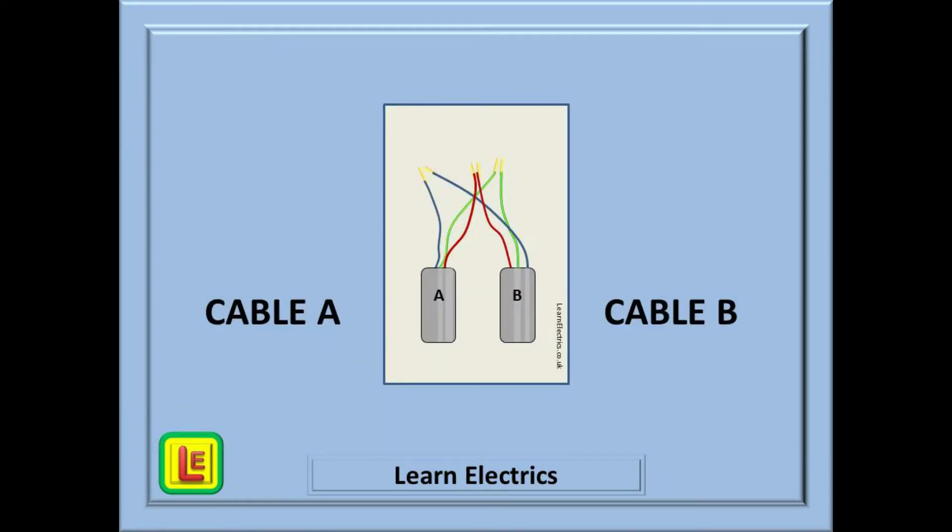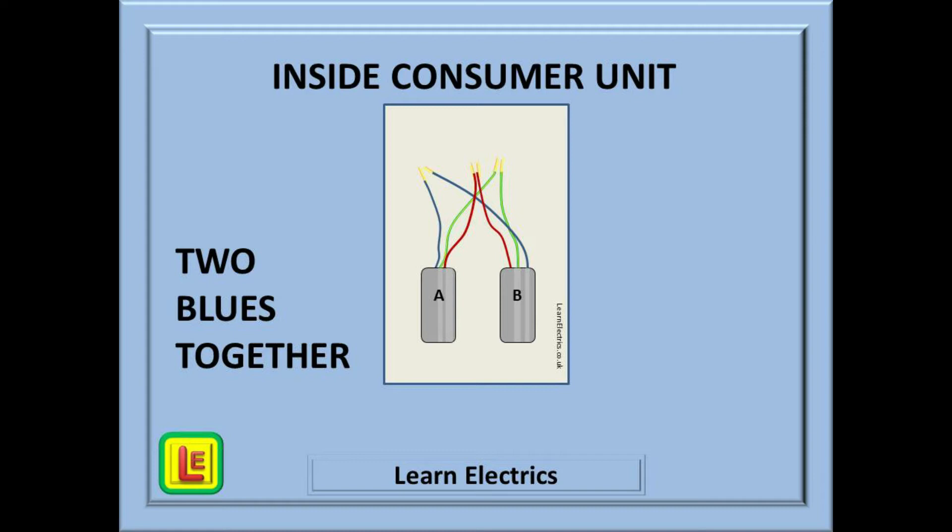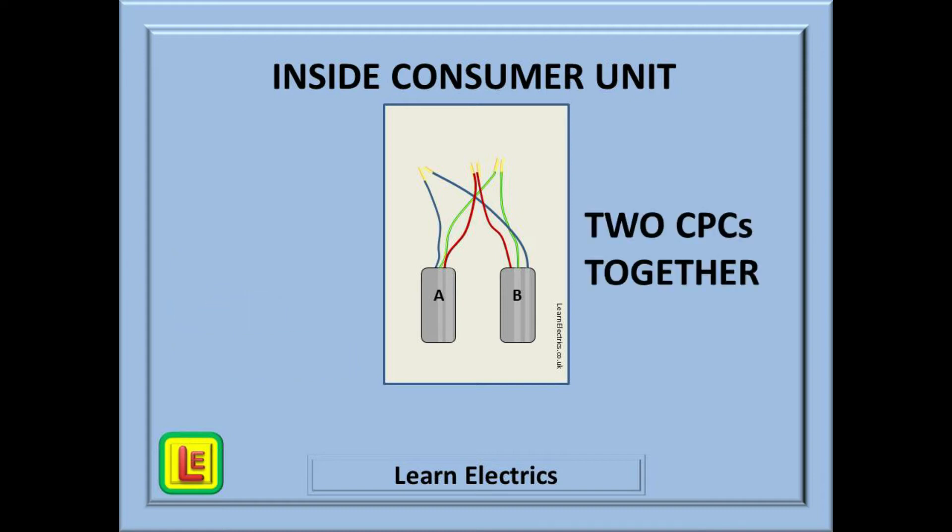For this video we will base everything on standard grey 2.5 millimeter twin and earth cable. At the consumer unit there will be two ends of the same twin and earth cable, and here we have marked them as A and B. Inside the consumer unit, the two browns will be connected together into the same circuit breaker, the two blues will be connected into the neutral bar, and the two CPC conductors will be joined together into the earth bar.